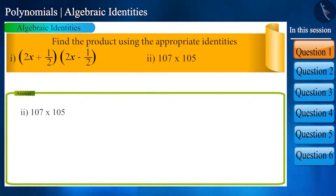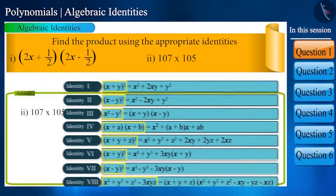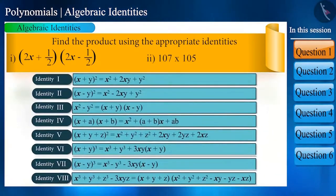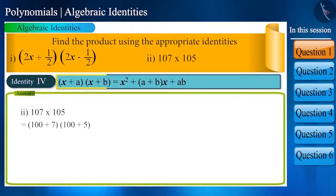Now let's find the solution to another sub-question. In a similar way, all identities are related to the addition or subtraction of two terms. If we write it in the form of (100 + 7)(100 + 5), it will look like identity 4: (x + a)(x + b) = x² + (a + b)x + ab.